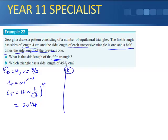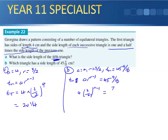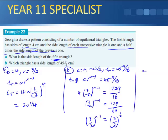Part B: Which triangle has a side length of 45 and 9 sixteenths? So we know our A is 4, we know our R is 3 on 2. So we want to know when T of N, so we want to know our N, when we have 45 and 9 sixteenths. I always go back to the rule. This will equal 45 and 9 on sixteenths. Substituting my A, I get 4 times 3 on 2 to the power of N minus 1, will equal 729 divided by 16. I get rid of the 4, so I divide it by 4, I end up getting 729 over 64, which equals 3 on 2 to the 6. Therefore I get N minus 1 equals 6, so N equals 7.